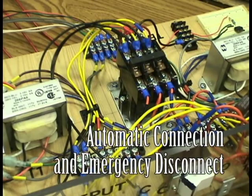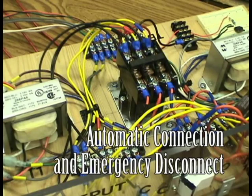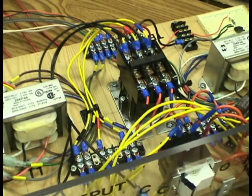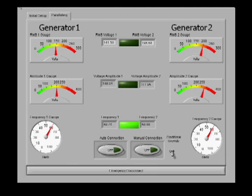Next, we will demonstrate the automatic connection and emergency disconnect. The LabVIEW program shows the voltage RMS at the top, voltage amplitude in the middle, and the frequency at the bottom. There are indicators that light up to display that these values are matched. The frequency is matched in this case due to the fixed speed of the induction motor.